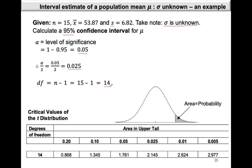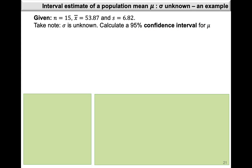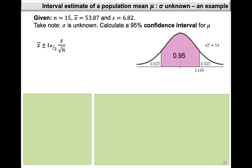From the t-table, with 14 degrees of freedom and 0.025 as the area in the upper tail, we get a t value of 2.145. Now let's calculate our 95% confidence interval for mu. This will be x-bar plus or minus t-alpha-over-2 times s over the square root of n. From the graph, the confidence coefficient is the shaded area in the middle, with alpha over 2 equal to 0.025 on either side, and our t value is 2.145 with 14 degrees of freedom.